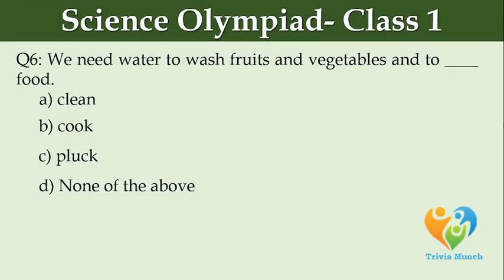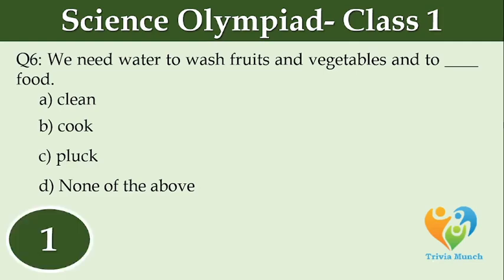We need water to wash fruits and vegetables and to dash food. Option A: Clean. Option B: Cook. Option C: Plug. Option D: None of the above.